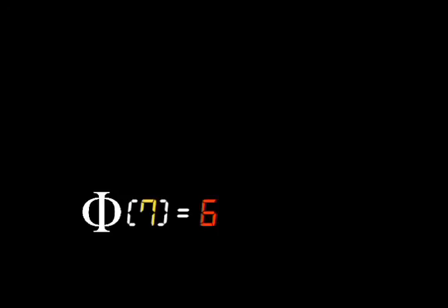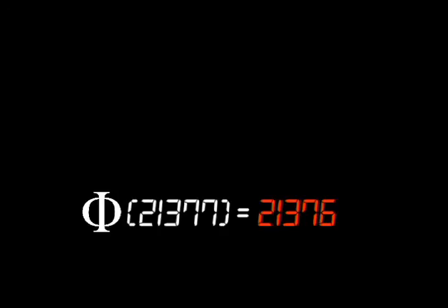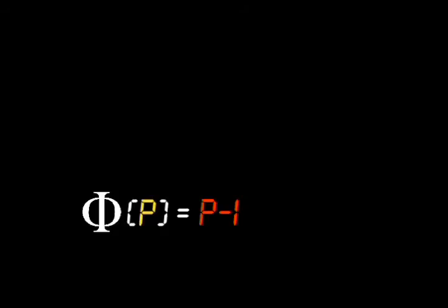So if you are asked to find phi of 21,377, a prime number, you would only need to subtract 1 to get the solution, 21,376. Phi of any prime is easy to compute.